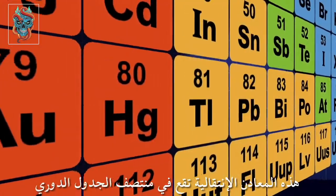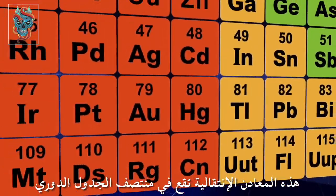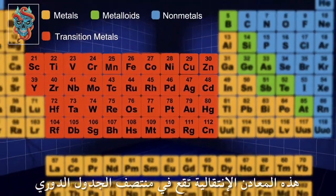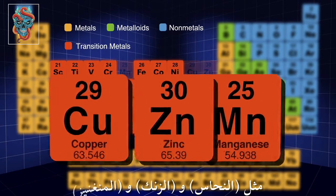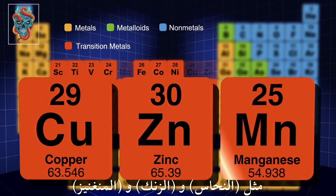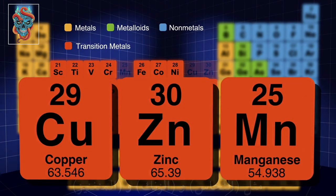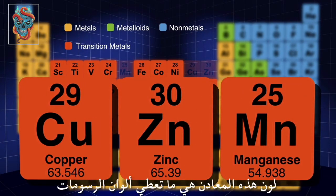These transition metals are located in the middle of the periodic table, like copper, zinc, and manganese. The color of these metal ions is what gives paint its color.